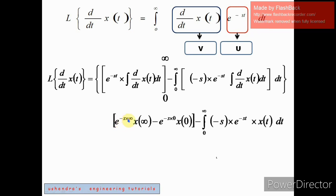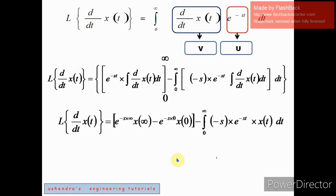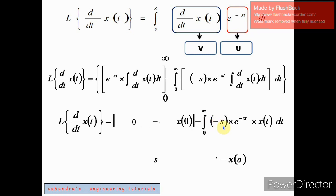Now watch carefully: e^(-s times infinity) equals e^(-infinity), which is zero. So zero times x(infinity) is entirely zero. And e^(-s times 0) equals e^0, which equals one. So in this expression we are left with simply that one term. Going ahead, we have minus x(0) here, and this expression has s which has nothing to do inside the integration.